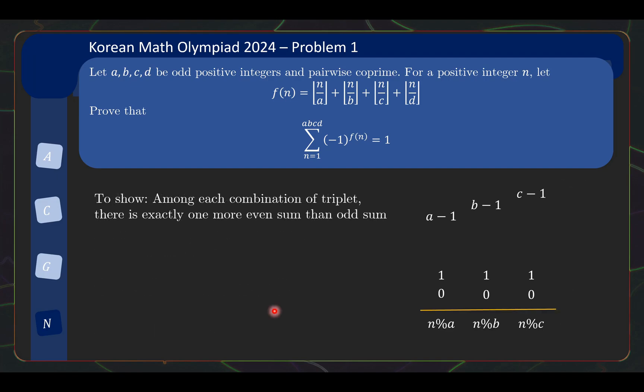So we simplify the problem now to the following. Among each combination of triplet, show that there is exactly one additional even sum relative to odd sum. And we can pretty much repeat the same argument as before. Basically for each choice of the first two terms, we pair up the last term, 0 with 1, 2 with 3, and so on, 1 would be odd, 1 would be even. Then basically you can pair up except c minus 1. So this means you reduce the problem to looking at each combination of pairs, and you repeat the argument over and over, and then finally you are down to the case that we just check that the last thing that you cannot pair, the single term of a minus 1, is even. And this is definitely true because a is odd.